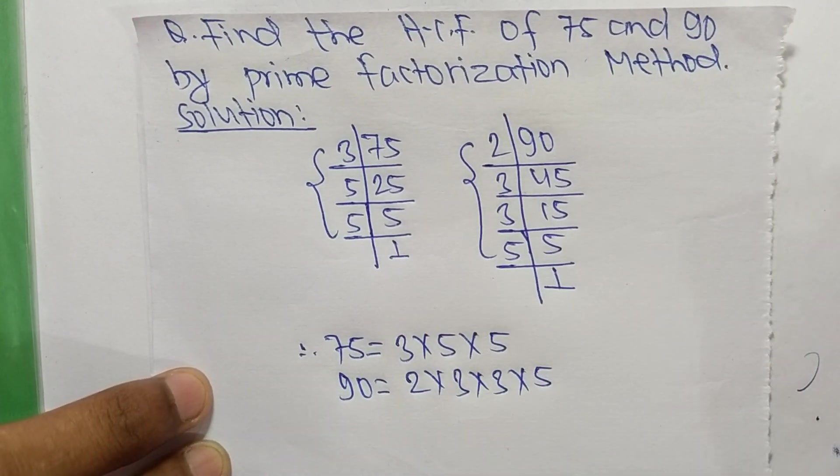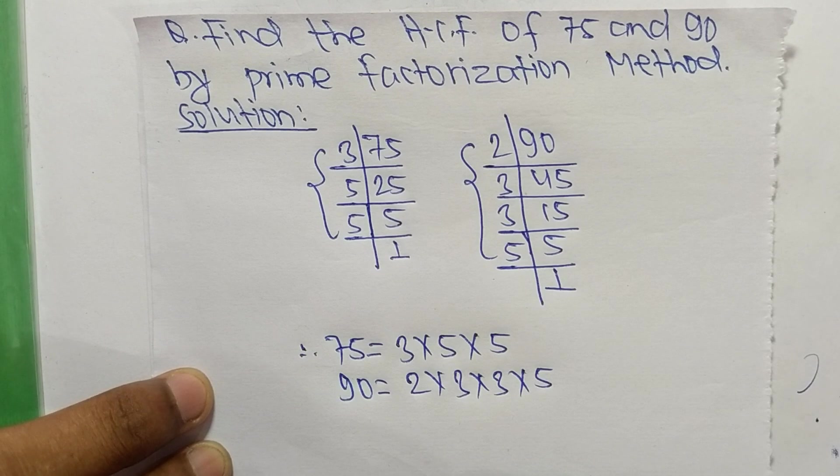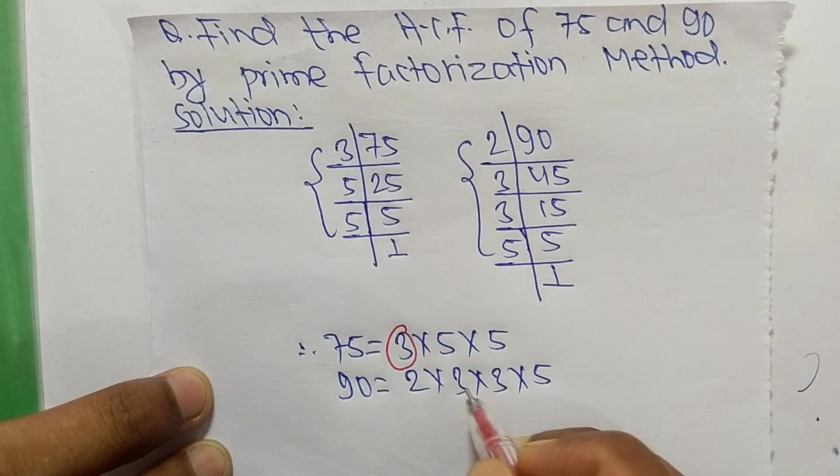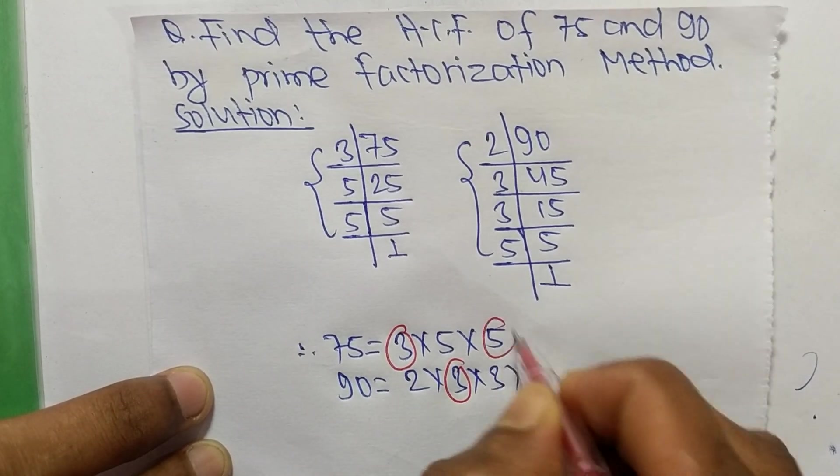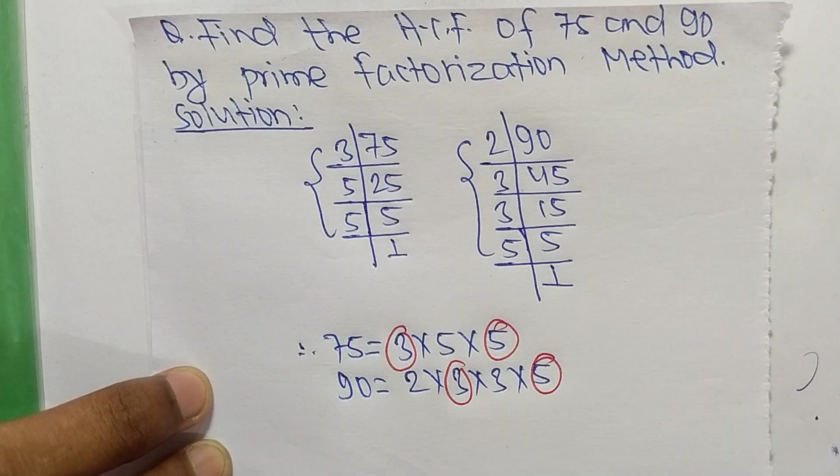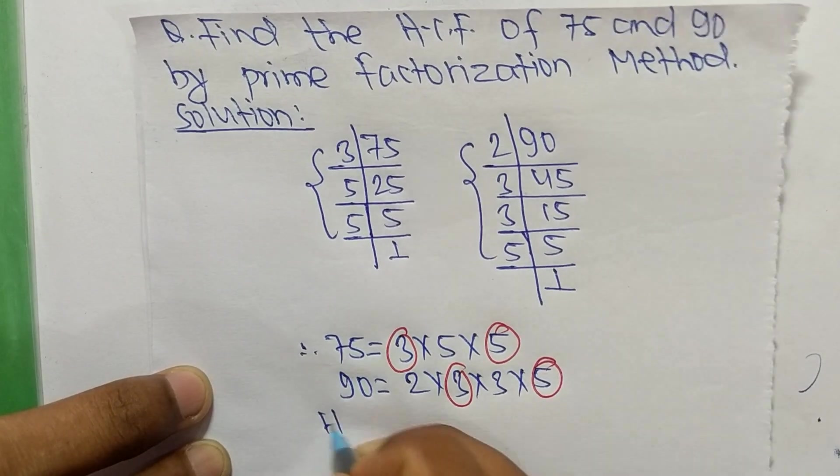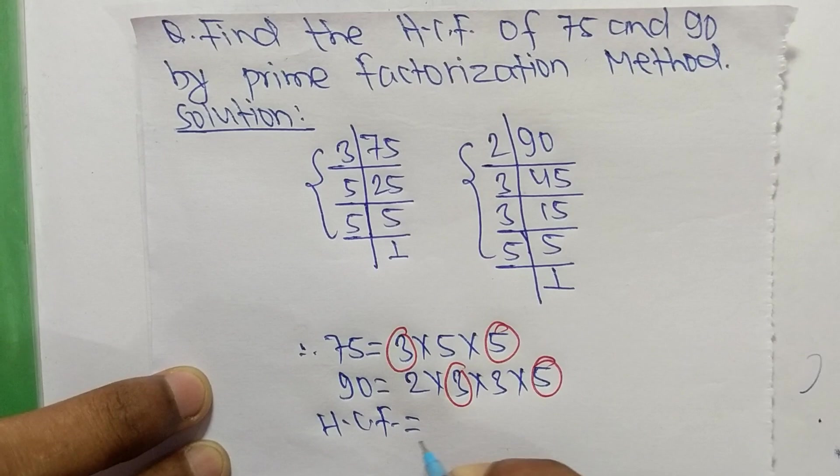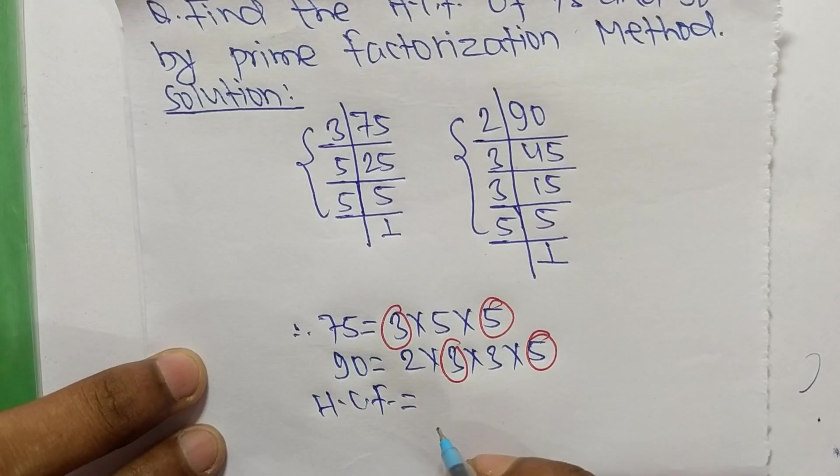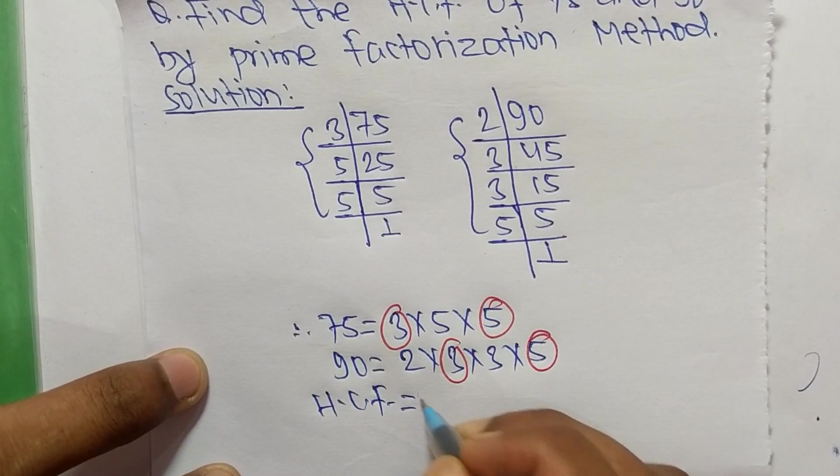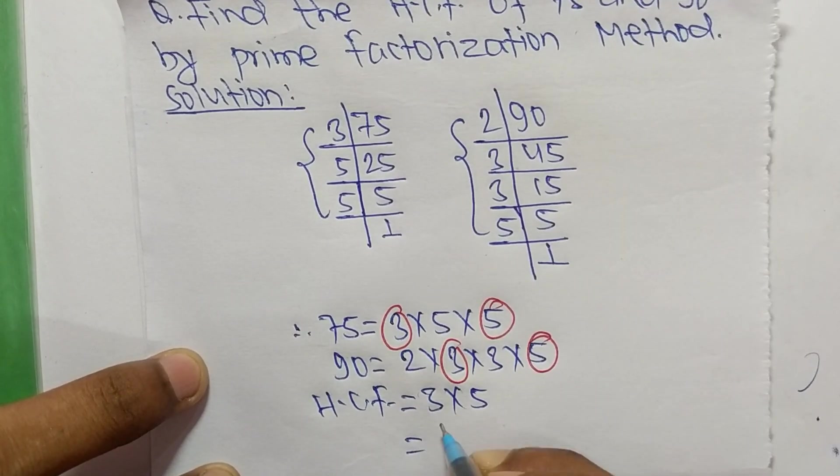So now we select the common factors in these prime factors. The common factors here are 3 and 5. So the HCF is equal to the product of common factors, which are 3 and 5.